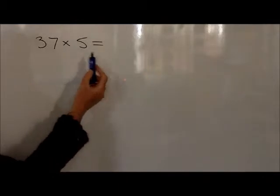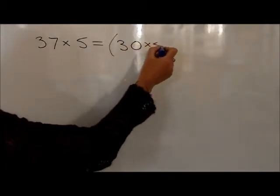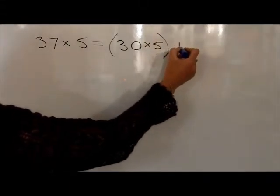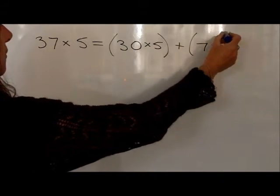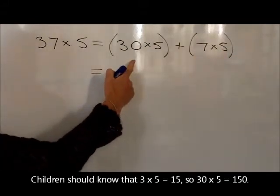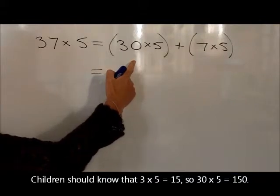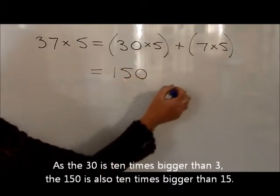write 37 times 5 is equal to 30 times 5, which is added on to 7 times 5. They would then work out the 3 × 5s, and they should know that three 5s are 15, so 30 × 5 is 150, which they